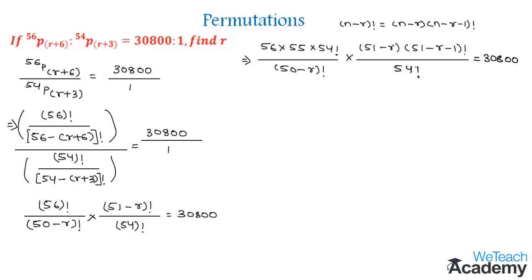Now, let us cancel 54 factorial and (50 minus r) factorial. We get the remaining values as 56 into 55 into (51 minus r) is equal to 30800.